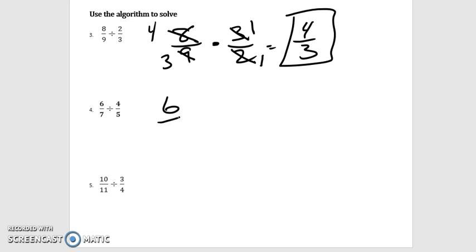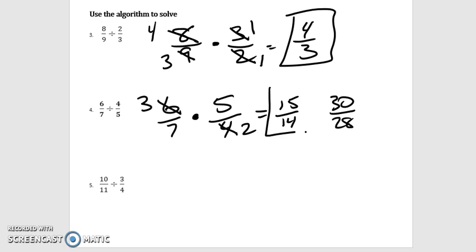All right. So again, leave the first fraction alone, change it to a multiplication problem, and then we flip that second fraction. Now there is cross division here. I can divide both of these by a two. Now if you missed the cross division, you would have ended up with 30 28ths, but then you need to simplify it. So it's easier to do your simplifying with your numbers that are smaller. I can divide both of these by two. So I take six and divide it by two, I get a three. Take four and divide it by two, I get a two. So when I multiply across, I get 15 14ths. There's my answer.